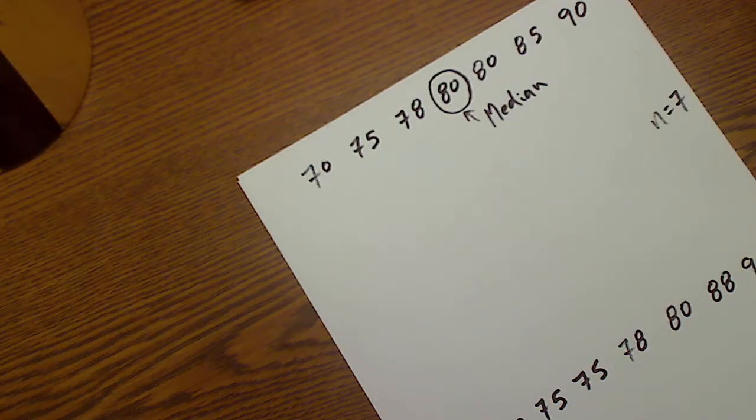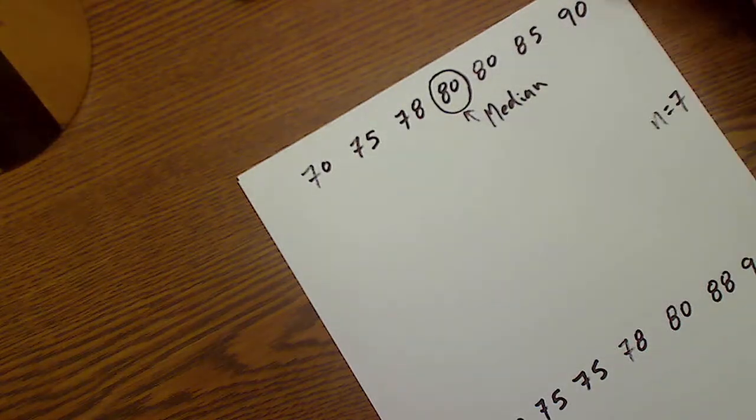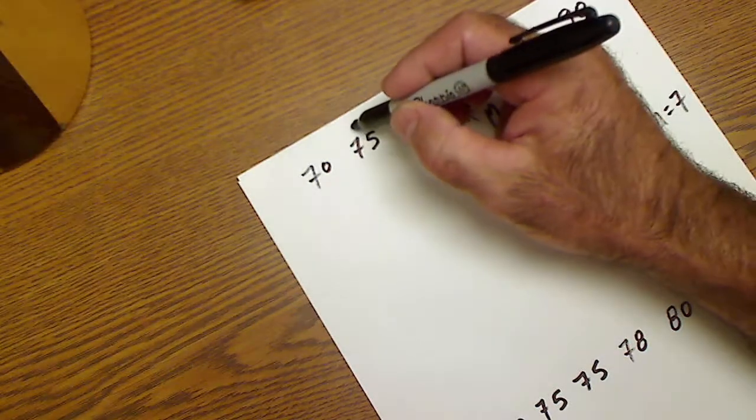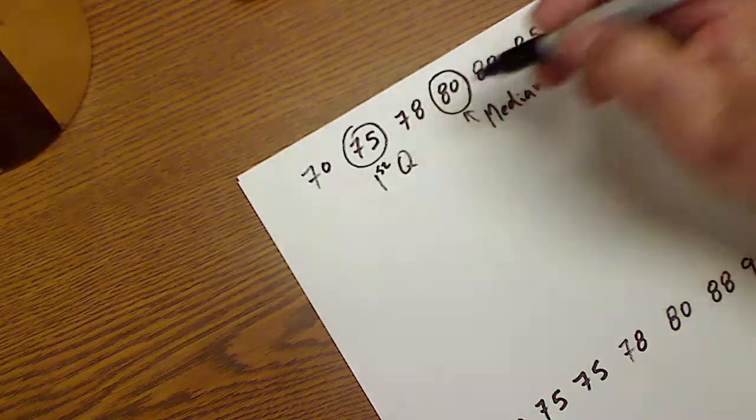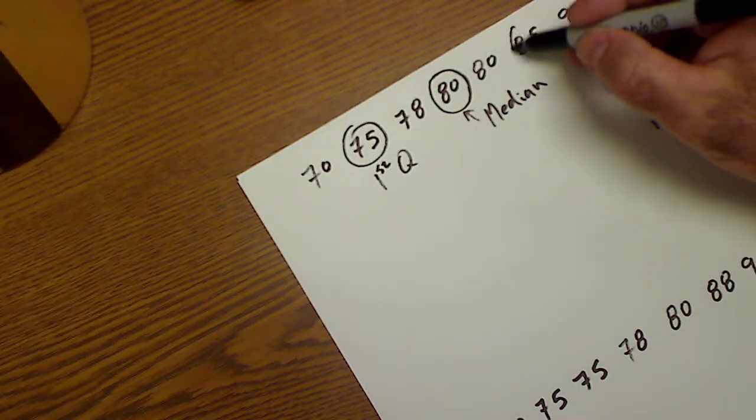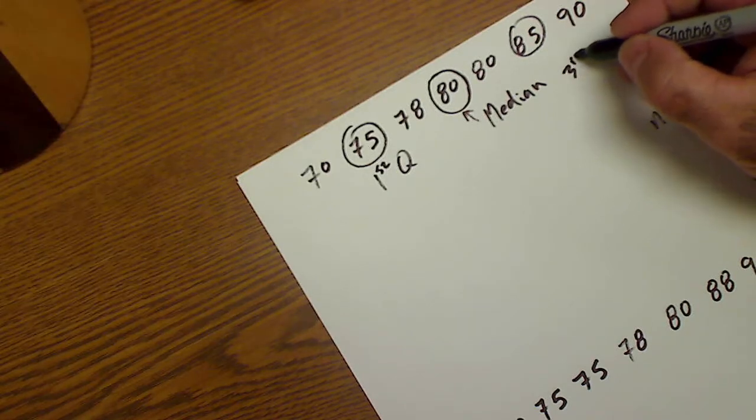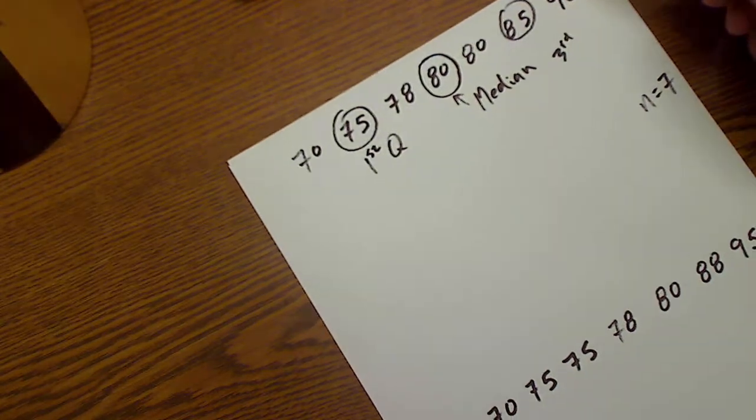Then I need to find the first quartile. Well, there are three values to the left, three values to the right. So this is my first quartile. This would be my second quartile. This would be my third quartile. And that's how I split it.